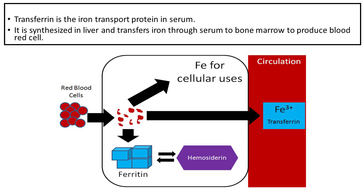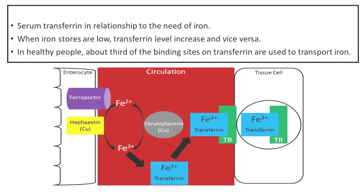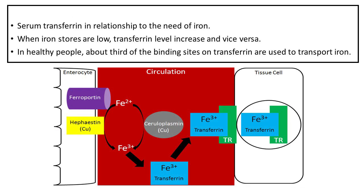Transferrin carries iron to bone marrow to produce red blood cells. Serum transferrin levels relate to the body's need for iron — when iron stores are low, transferrin levels increase, and vice versa.